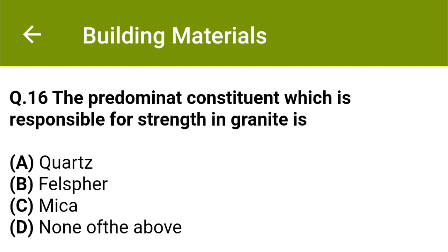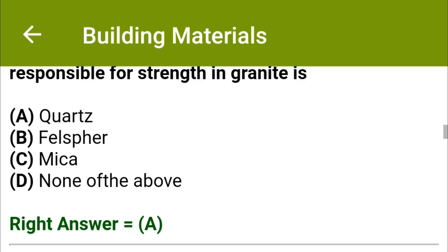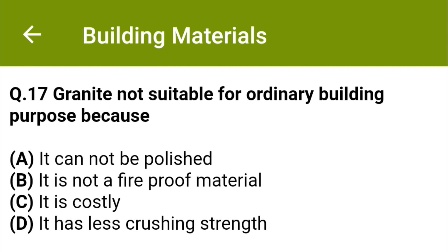The predominant constituent responsible for strength in granite is Option A quartz, Option B feldspar, Option C mica, Option D none of the above. The correct answer is Option A, quartz. Granite is not suitable for ordinary building purposes because Option A it cannot be polished, Option B it is not a fireproof material, Option C it is costly, Option D it has less crushing strength. The correct answer is Option C, it is costly.